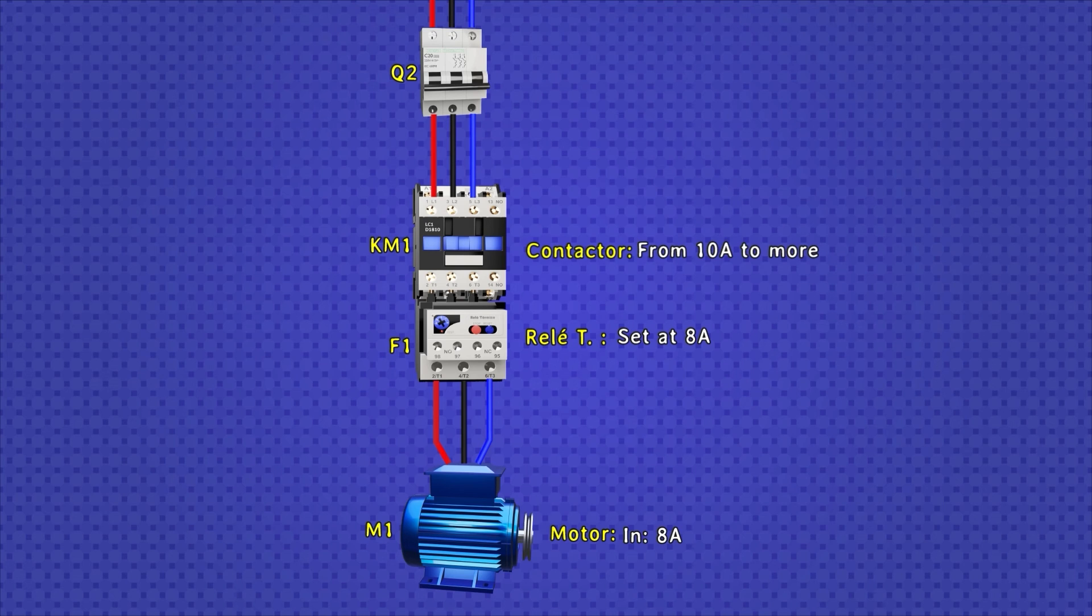This is why the thermal relay must be adjusted to the same working current intensity of the motor. As for the contactor, it is recommended that it can withstand a current intensity of at least the maximum current intensity of the thermal relay. That is, for this case, as the thermal relay can be adjusted from 7 amps to 10 amps, then the contactor must support at least those 10 amps. If it supports more, it is better.